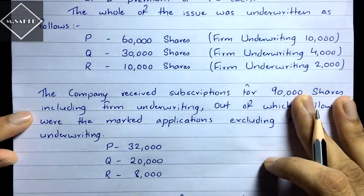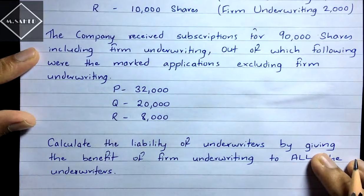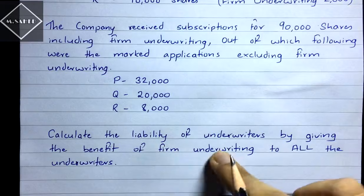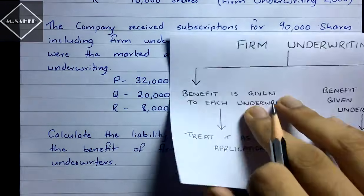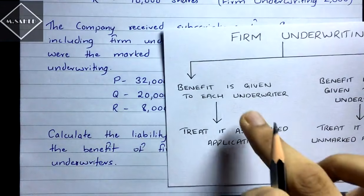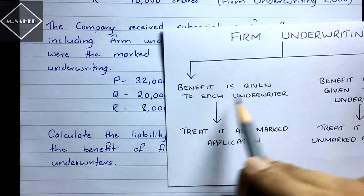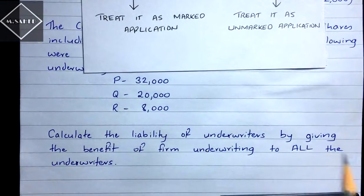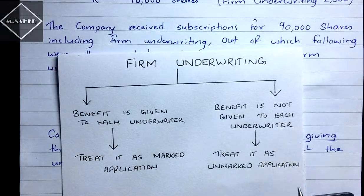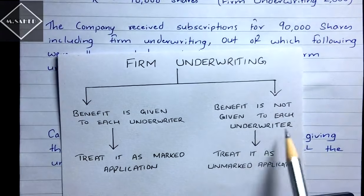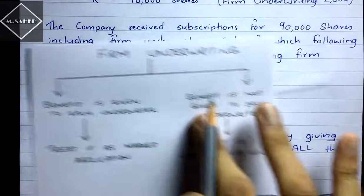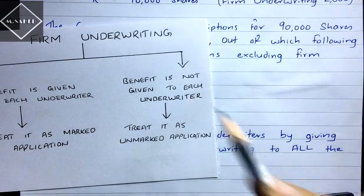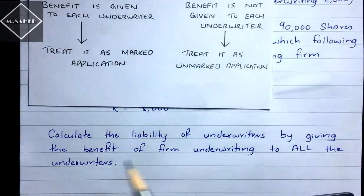The marked applications are: P — 32,000, Q — 20,000, R — 8,000. The question says calculate the liability of underwriters by giving the benefit of firm underwriting to all the underwriters. In the previous video, the benefit was given to each underwriter and treated as marked applications. Here the benefit is given to all the underwriters, which means it must be treated as unmarked applications.